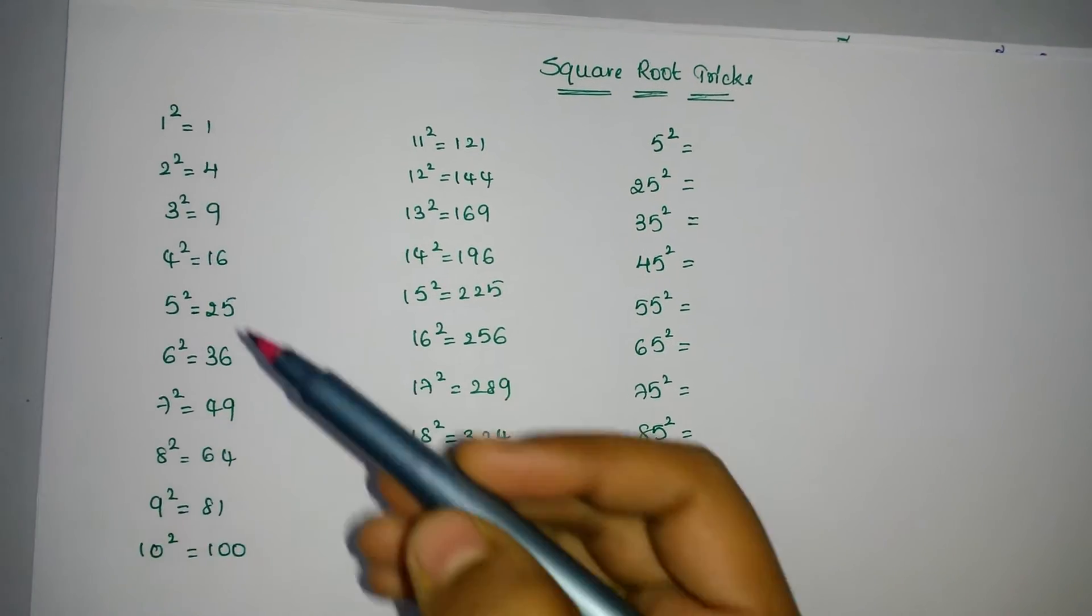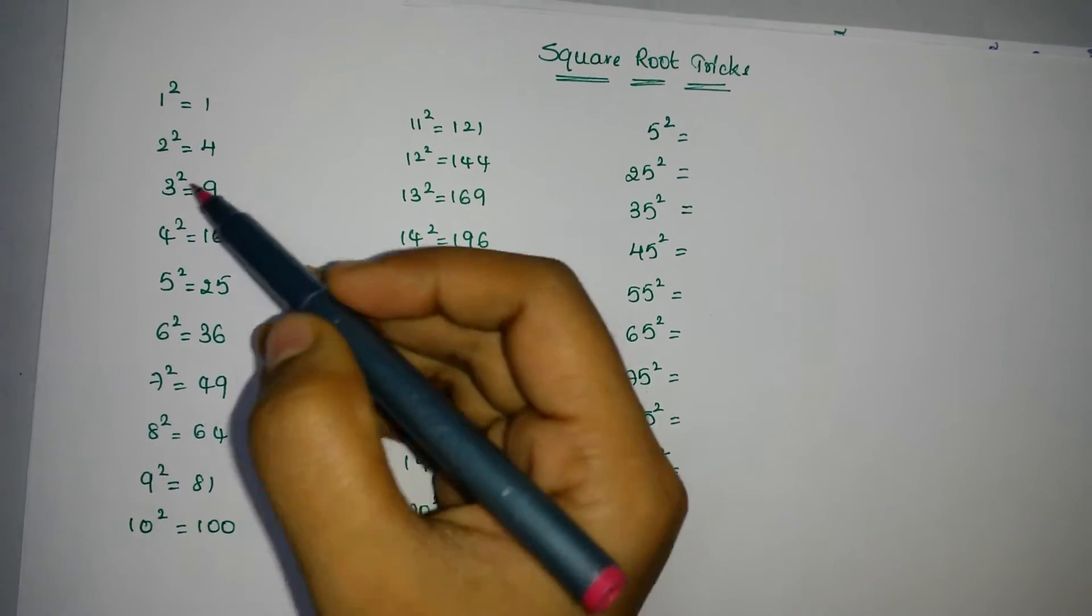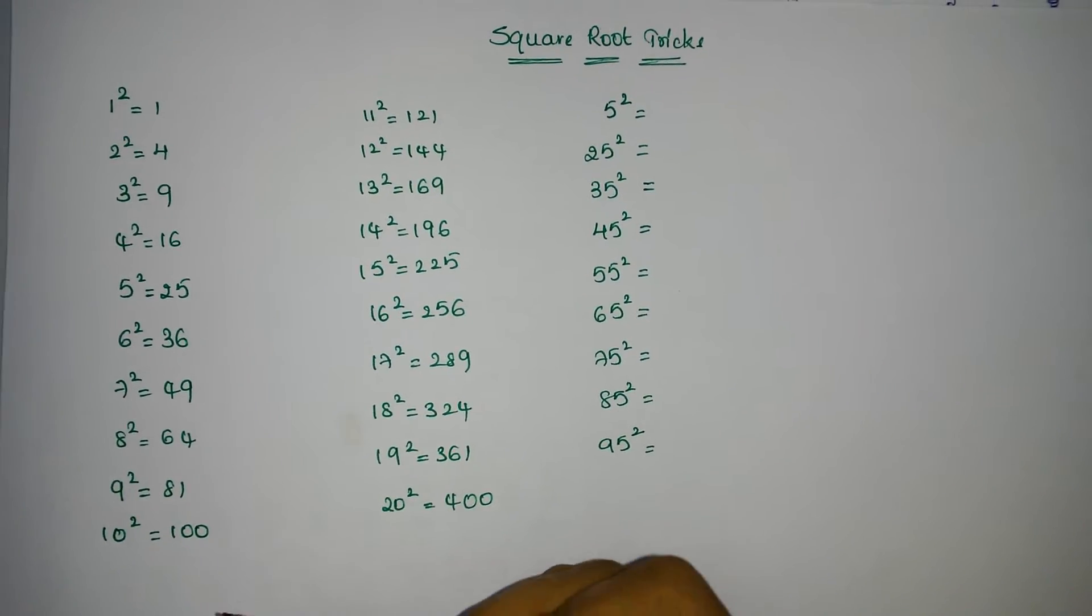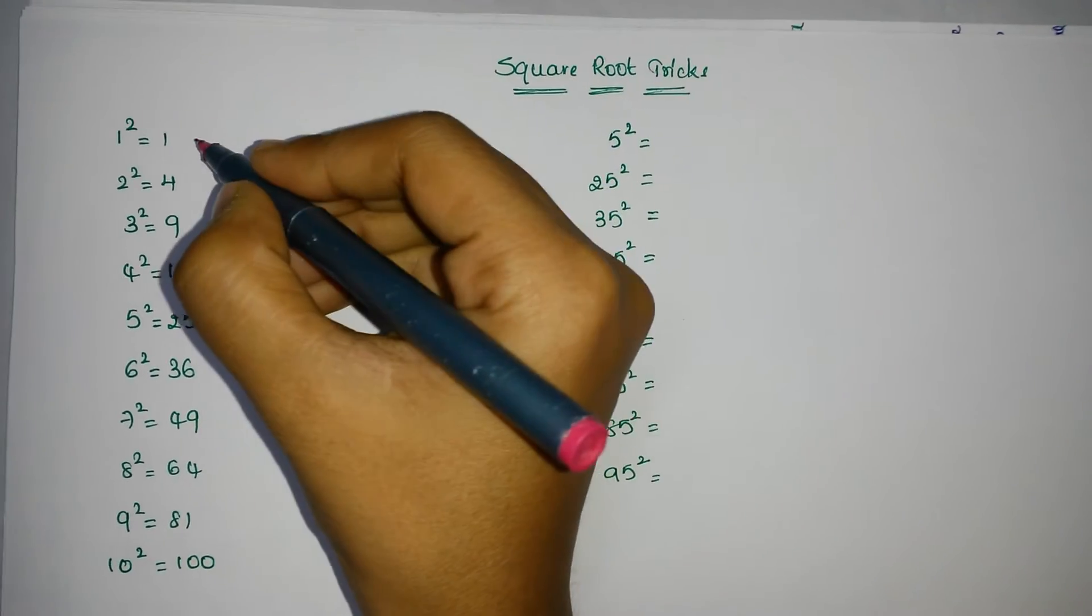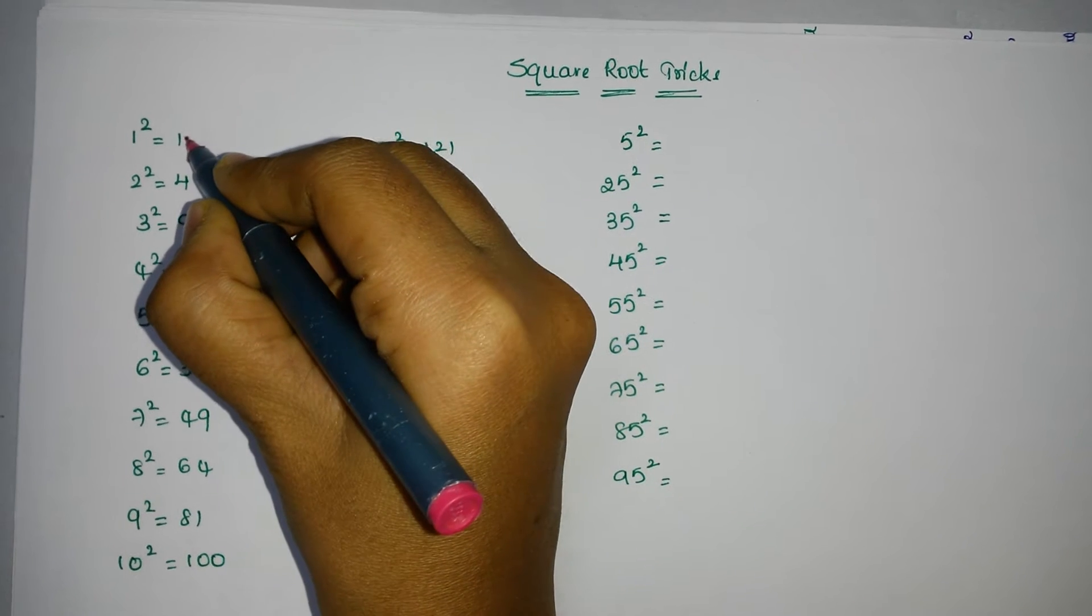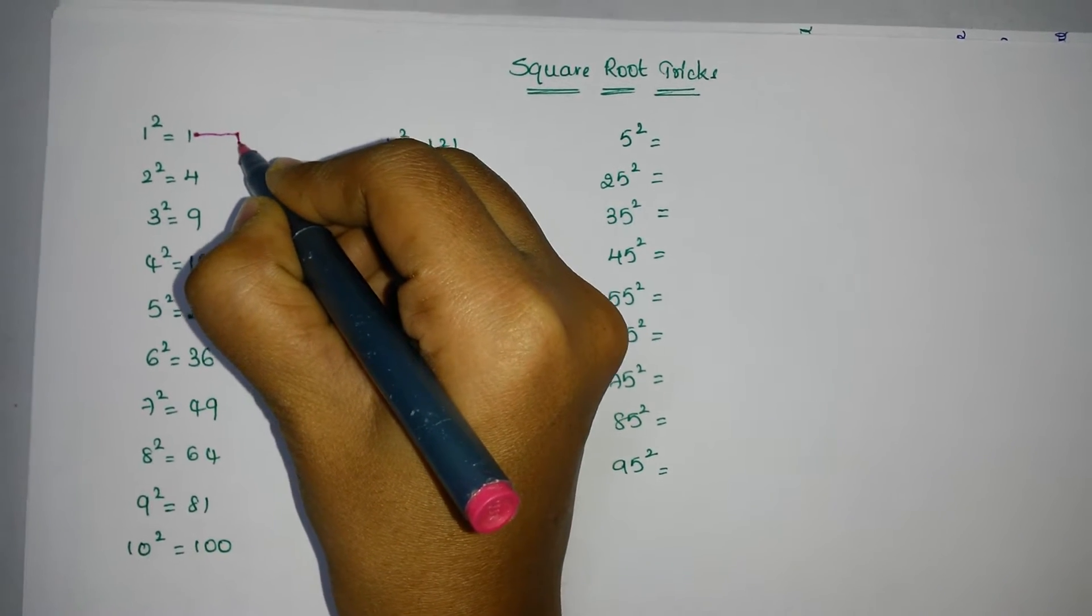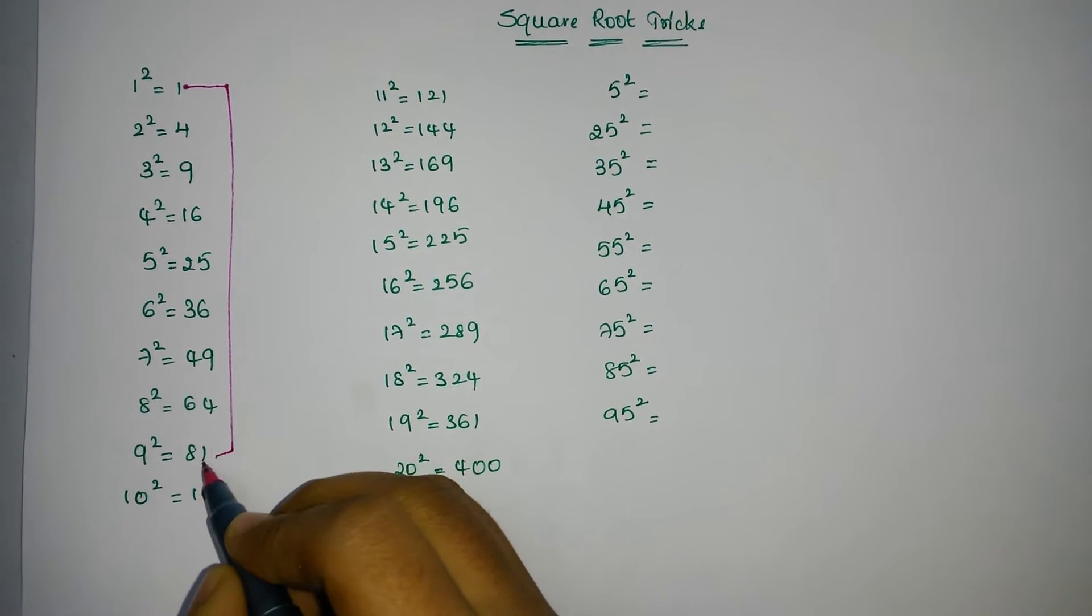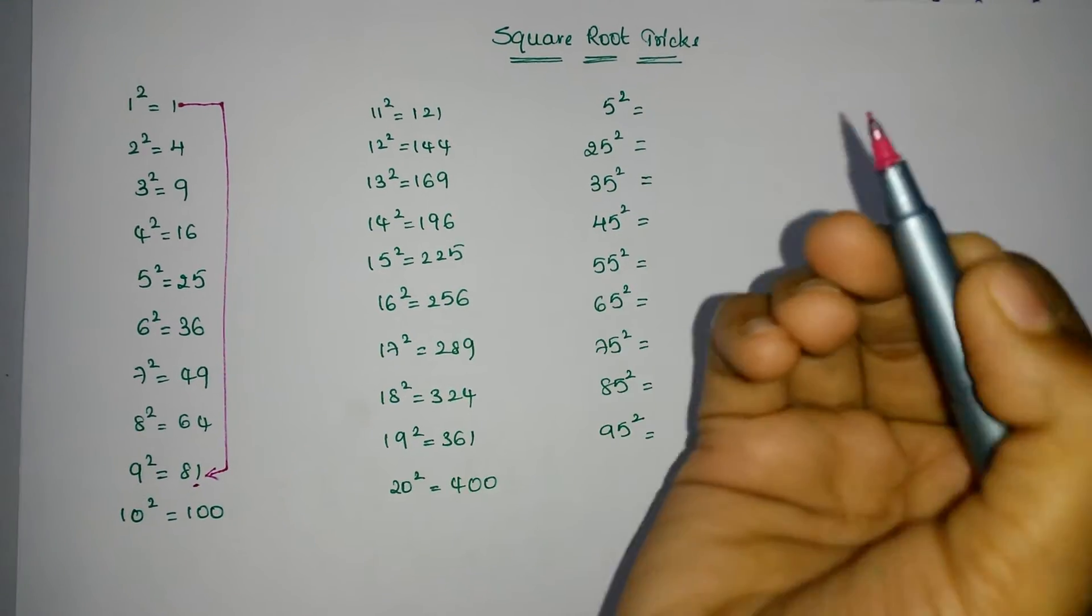You all know the square of 1 is 1, 2 square is 4, 3 square is 9, 4 square is 16, and in the same way 10 square is 100. Now please observe here: the squares of 1 and 9 both have 1 in the unit's place.